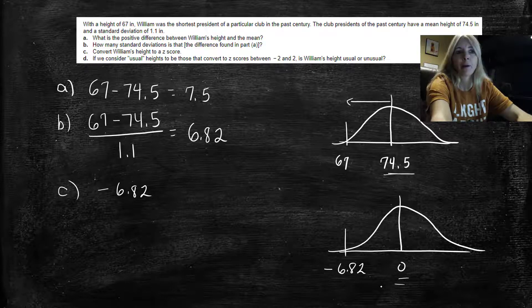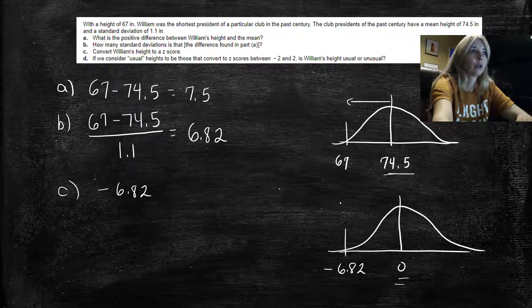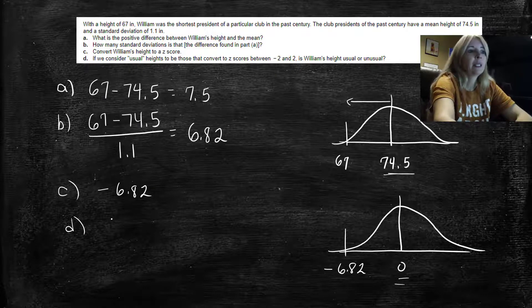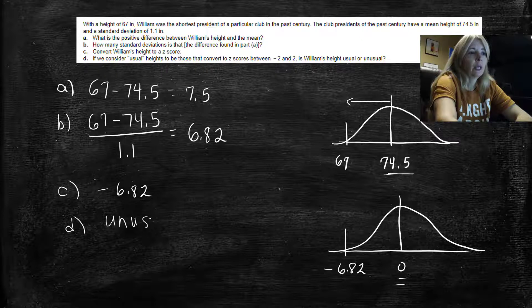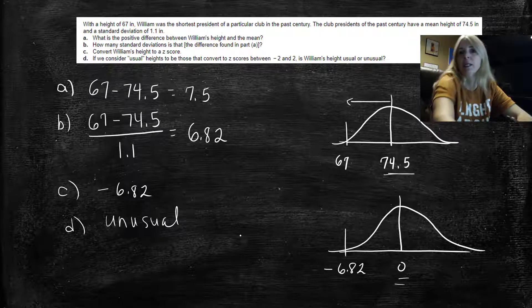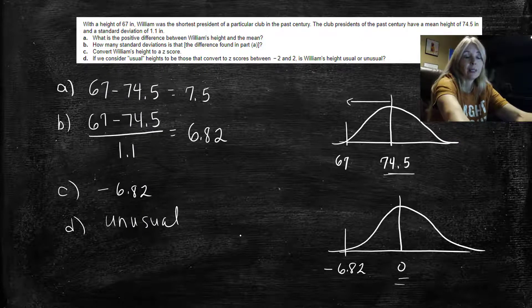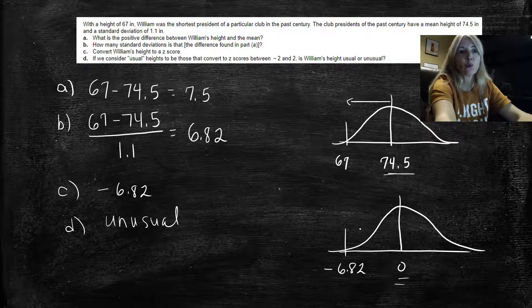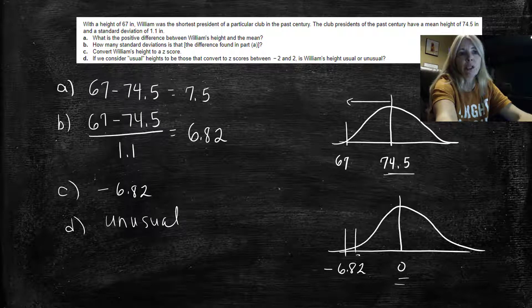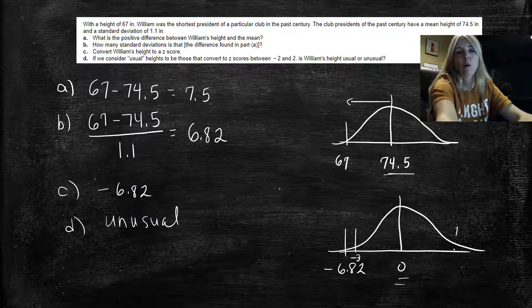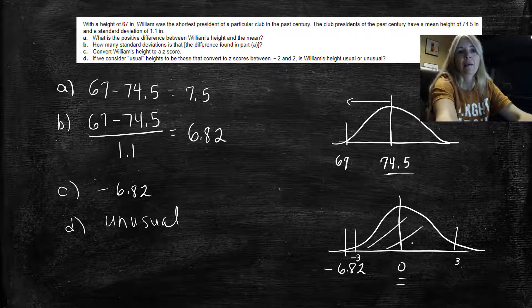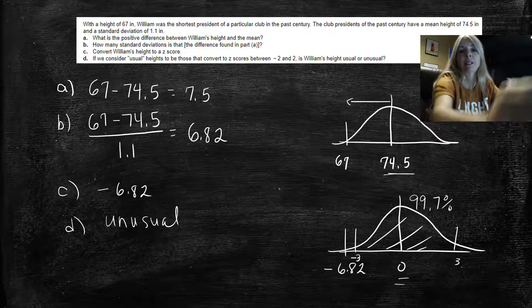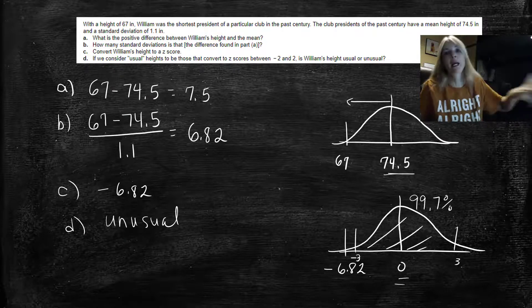All right, because we're going to use these z-scores. And then part d asks, is this unusual? Well yeah, it's definitely unusual, because as you'll see in this lesson where we talk about—if you're three standard deviations below and above the mean, that's 99.7% of our data. So he's even way below that.